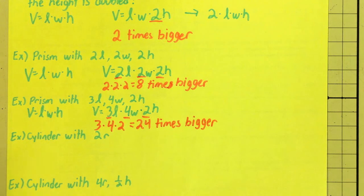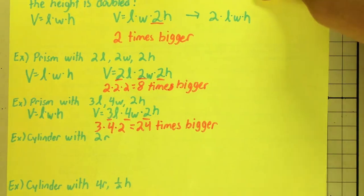So, you're multiplying those numbers for prisms. Now, let's take a look at the cylinder. Cylinder doesn't have length width or height. Cylinder is radius and height.